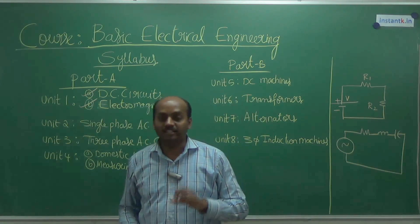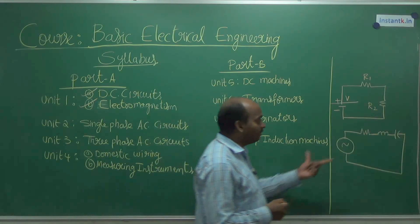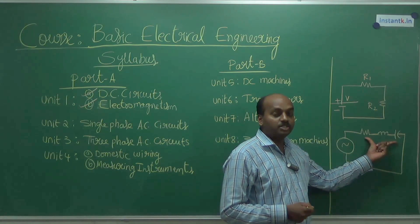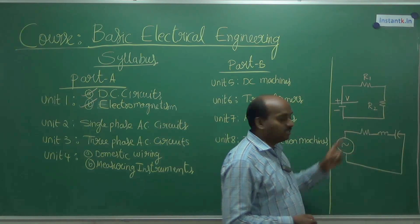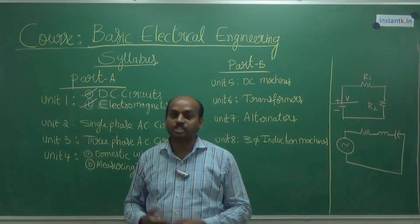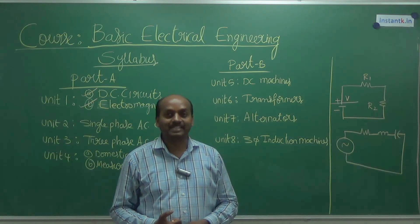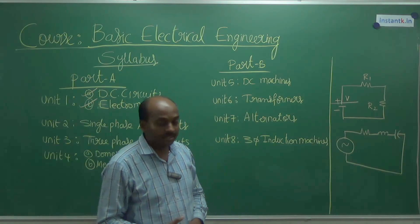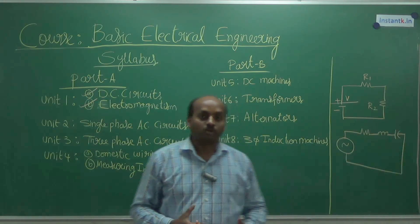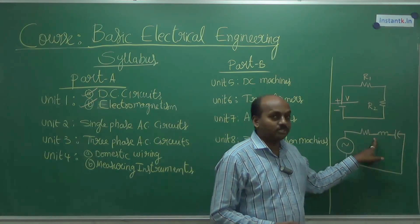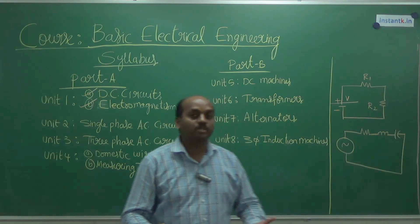In AC circuits, we have all 3 passive elements: resistor, inductor, and capacitor. Out of these 3 elements, which ones store energy and which ones consume power? The resistance consumes power — examples are an iron box, a bulb, incandescent lamp, heating devices, geyser. But inductor and capacitor do not consume power. Rather, the inductor stores power in the form of electromagnetic field, and the capacitor stores in electrostatic field. They never consume power; they store it.